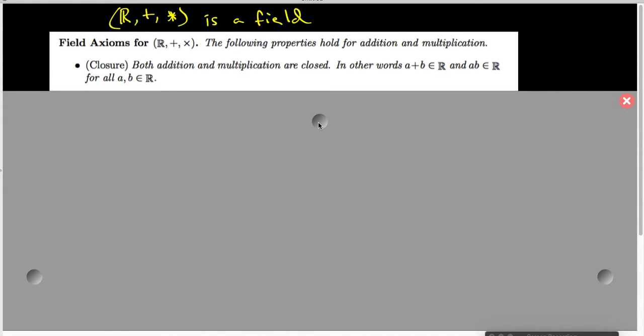The first property is closure. If you add or multiply two real numbers together, you wind up getting another real number. That's what we mean by closure. So A plus B and A times B are both real numbers whenever A and B are real numbers.